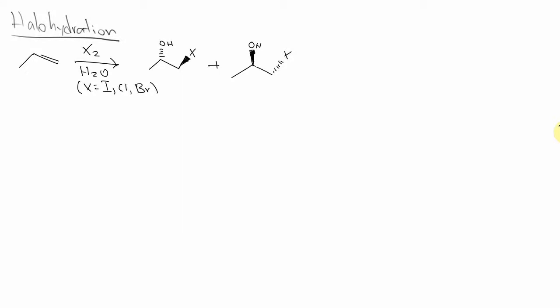So in this video we're going over the halohydration mechanism and you're basically adding an X2 gas - X is a halogen, so a halogen gas like I2, Cl2, or Br2 - and water.